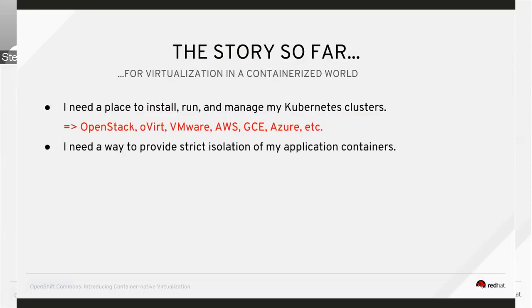The other use case we've seen a lot of discussion about for containers and virtualization is around: I already have an application container, but I'm concerned about providing strict isolation for those containers using hardware virtualization technology. That is what the Kata Containers and gVisor projects are largely concerned with — if you have an application container and want strict isolation, they can help. That is not the problem space we are aiming at with container native virtualization and KubeVirt.